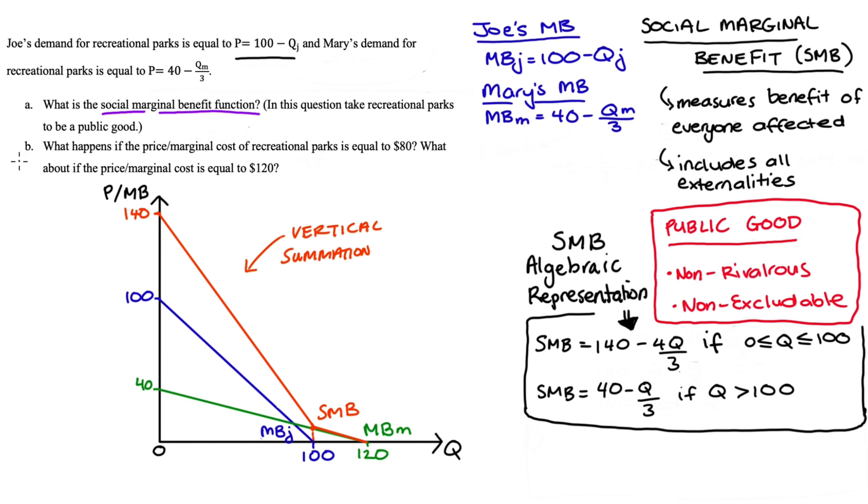The vertical summation I did in part A and I'll link to that video below in the description. In that video we found the diagram that I have here and also the algebraic representation of our social marginal benefit function. So a lot of the background stuff is in that first video and I strongly suggest that you go through that video first if you haven't already.